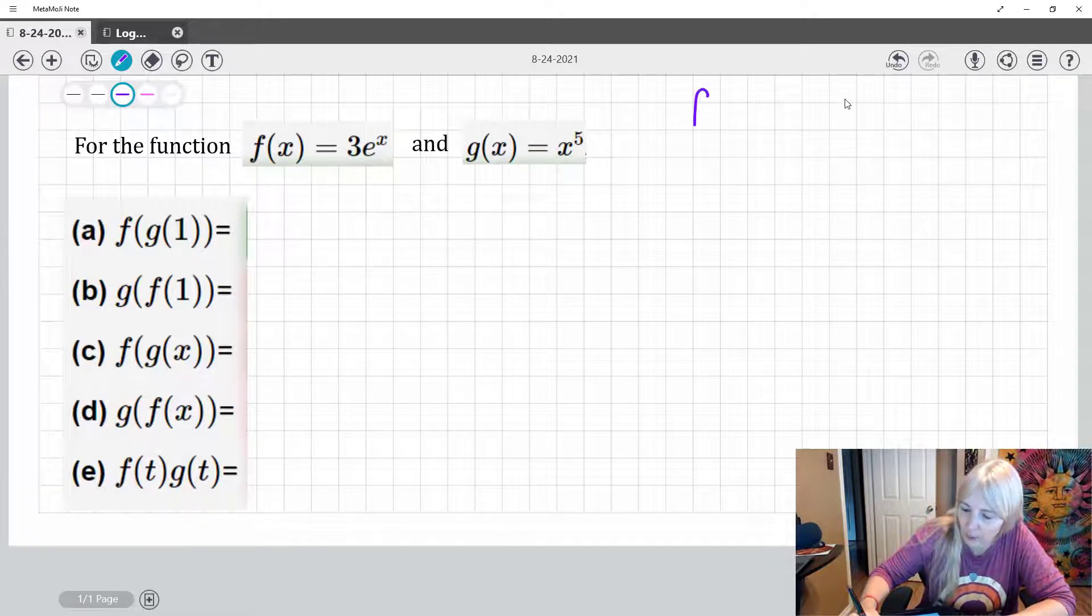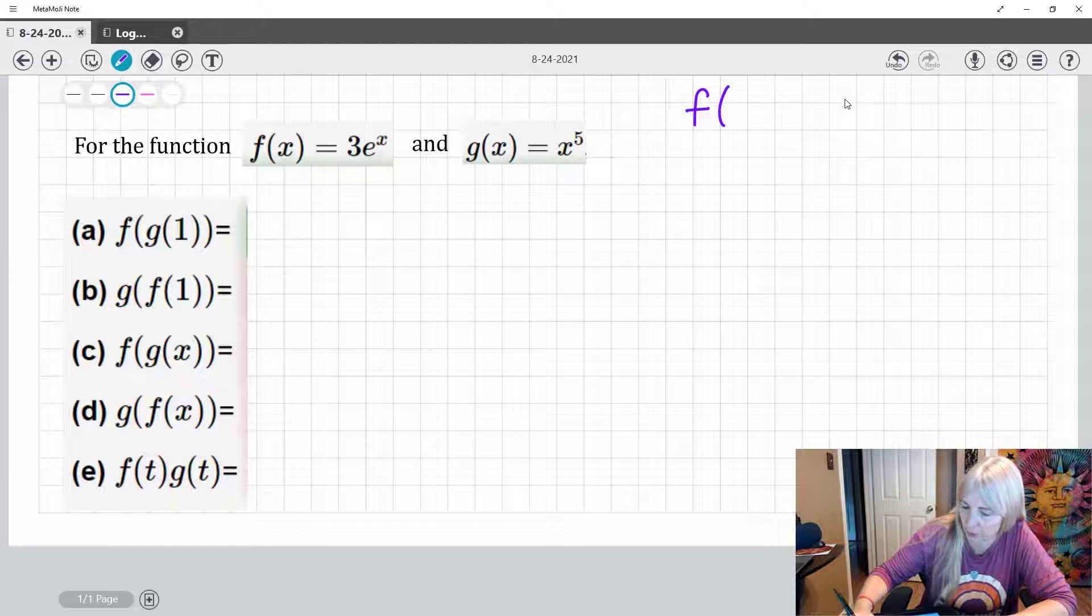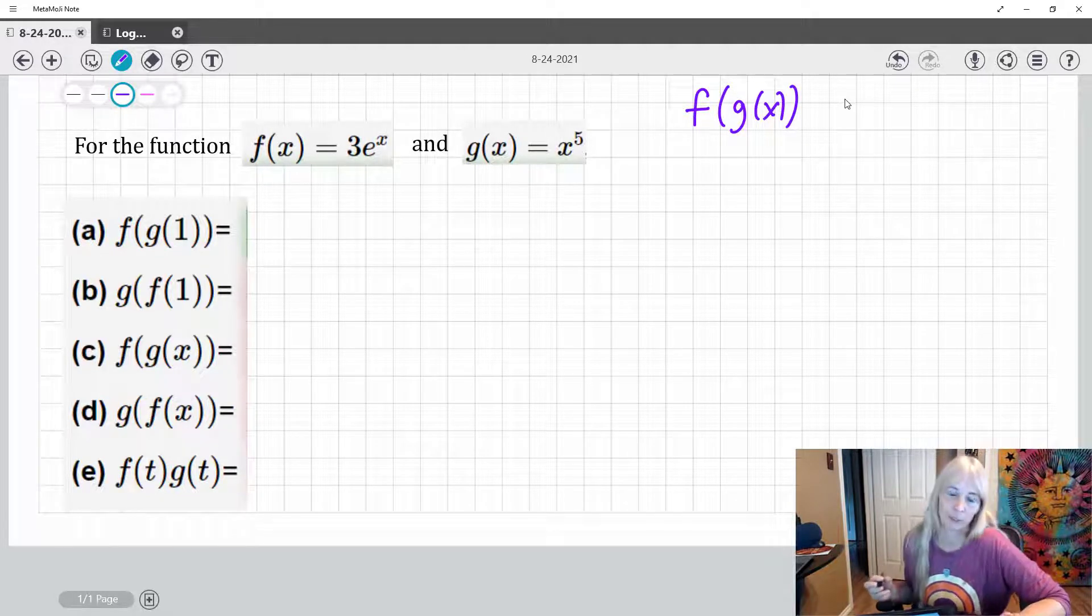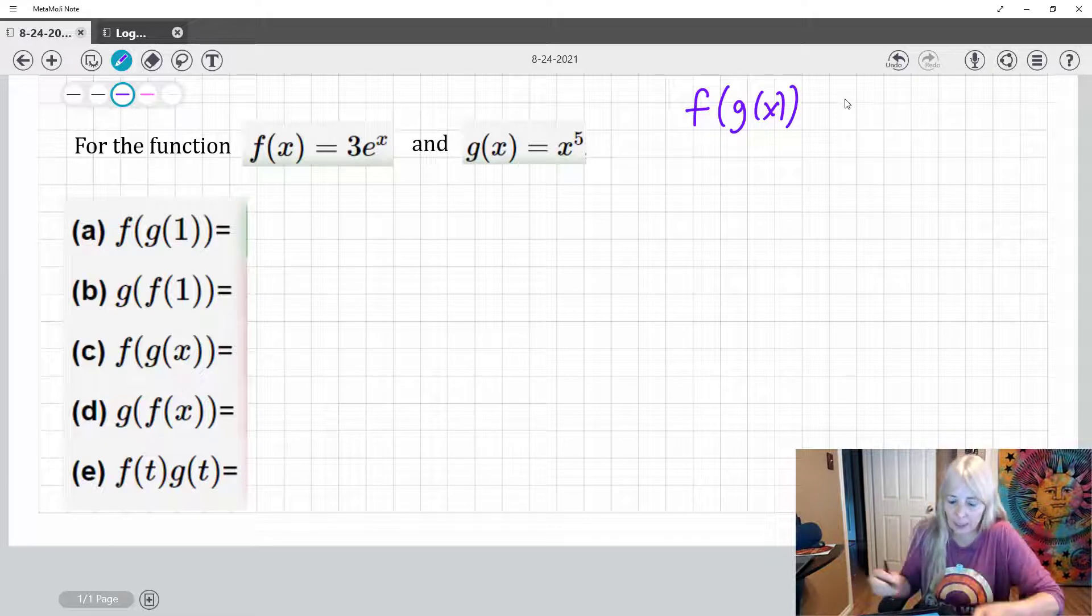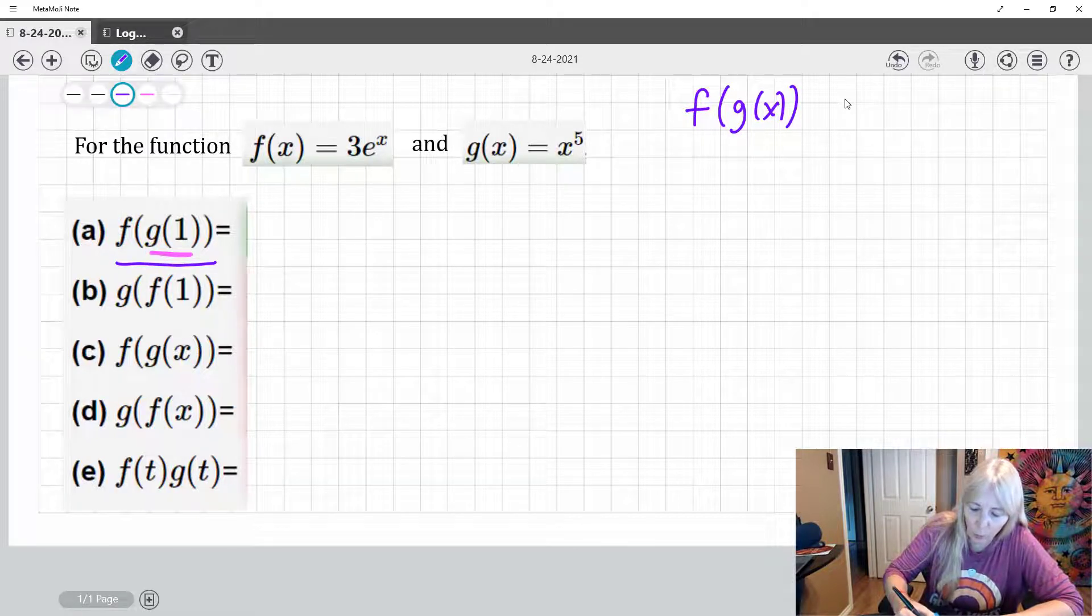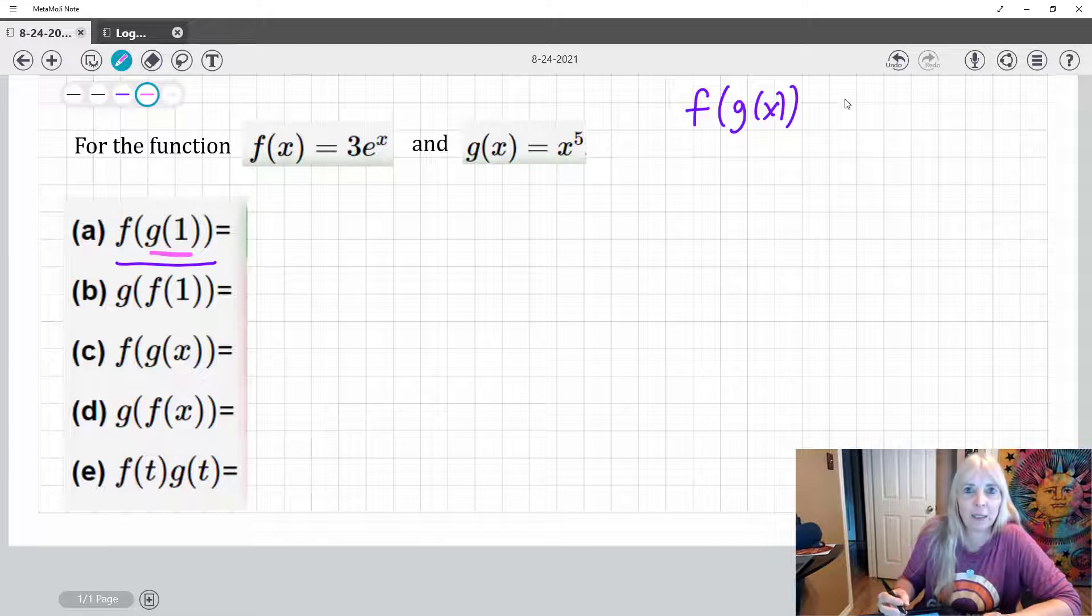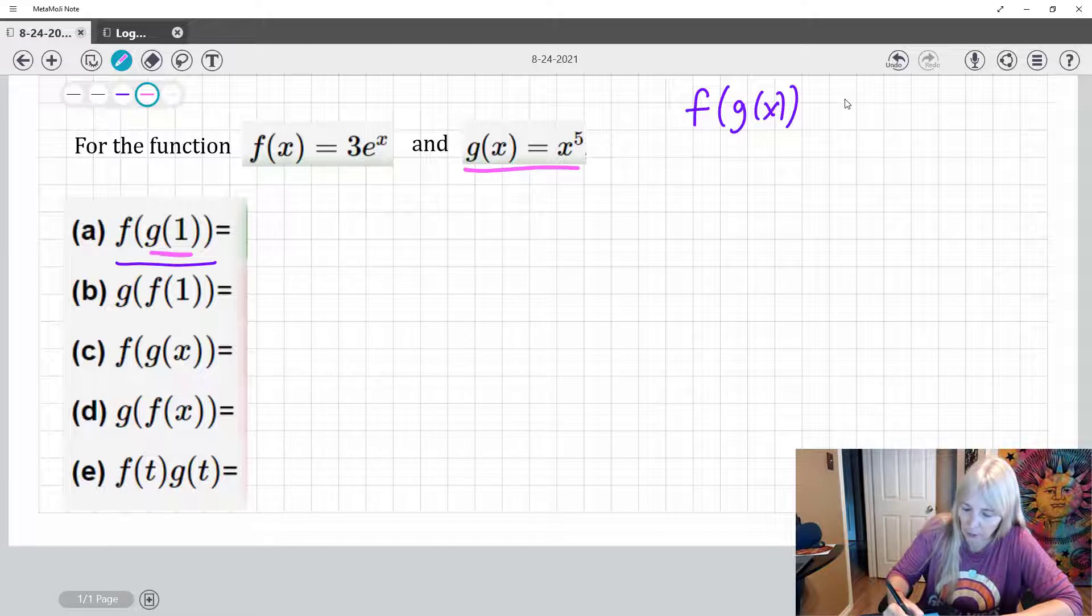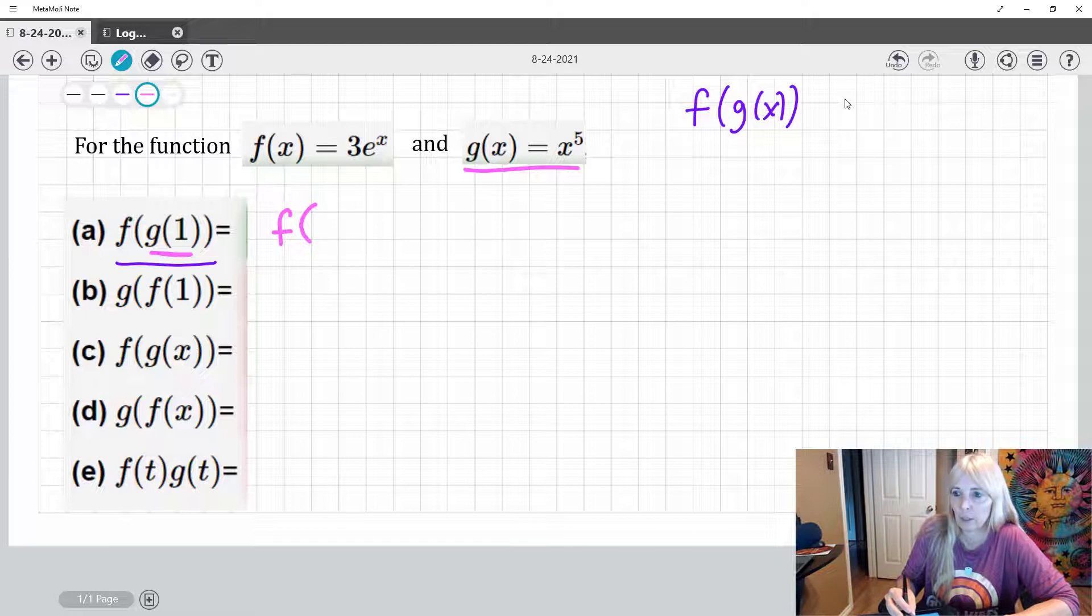Most of the time you see them written as, actually you will see part C written. And how I learned this, I mean you can use whatever way you want, but I find this the easiest way is to work inside and then do the outside. So what the inside says to do on this is look up here, my g of x. So it says to plug in where I see x, plug in one. Okay, so where I see x, plug in one.